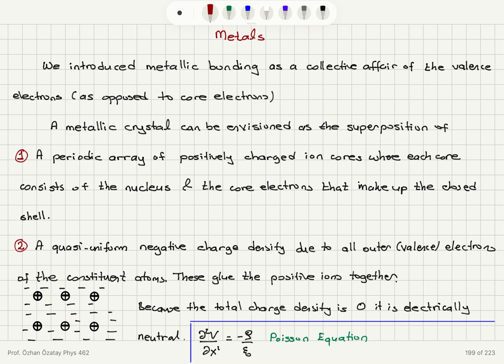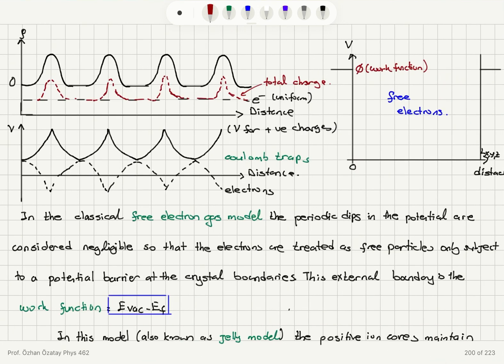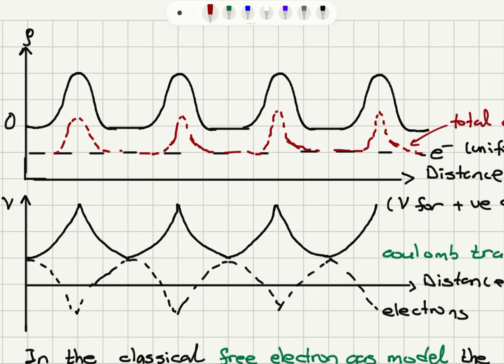Here is a quick reminder of the Poisson equation: the second derivative of voltage with respect to displacement x is minus the charge density divided by epsilon-zero, the permittivity of free space. So the total charge density equals zero for electrically neutral metals. When we look at the charge density as a function of distance, we have a uniform negative charge from the valence electrons released to the lattice.